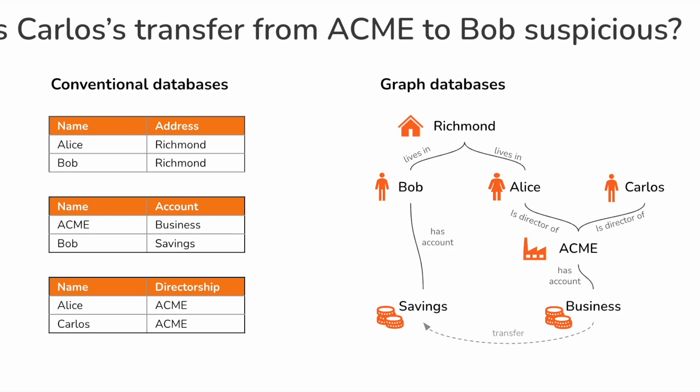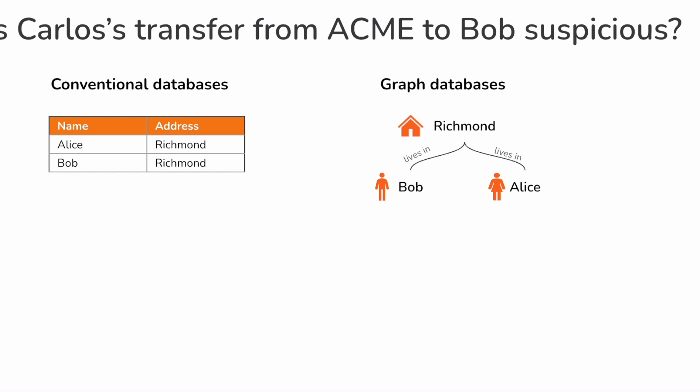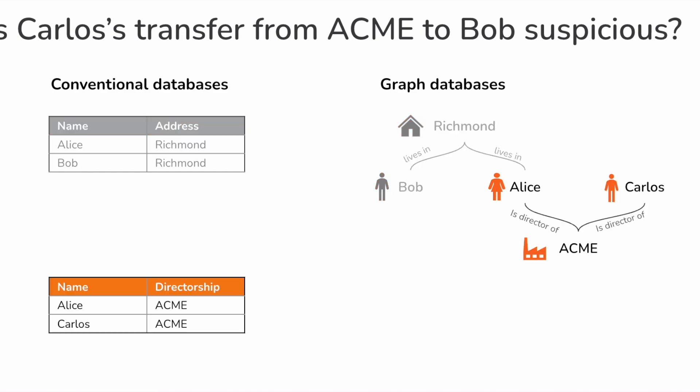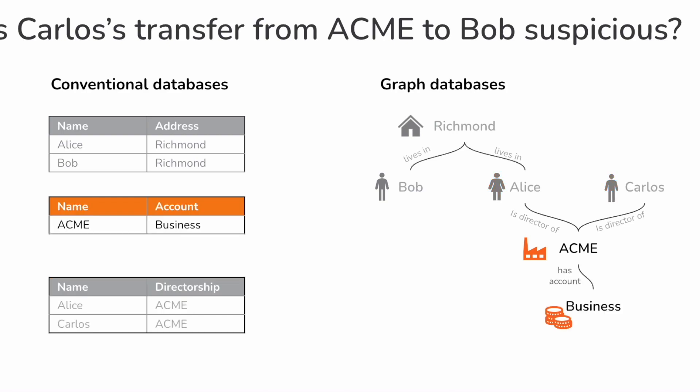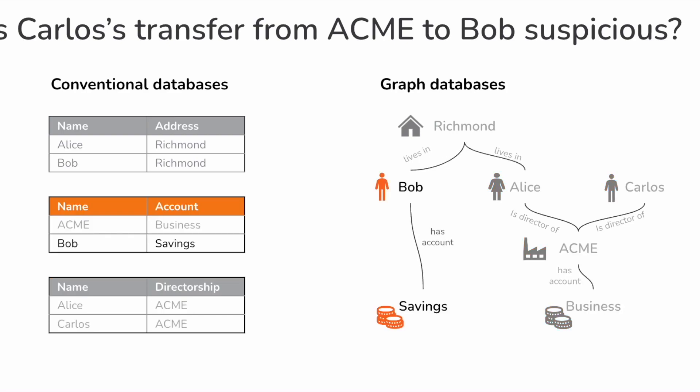Here's a little story about why you need a graph database. Have a look at the diagram on the right. It shows how Bob and Alice live together in a house in Richmond. Alice and Carlos are directors of a company called Acme. Acme has a business account and Bob has a savings account.